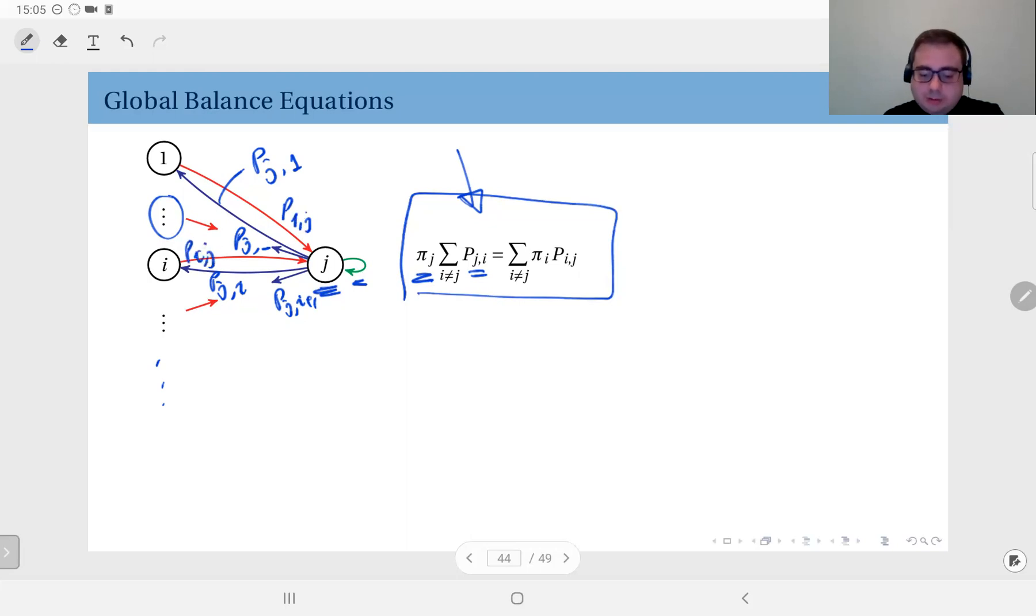If you multiply the probability of being in this state times the transition probability into j, plus all states - probability of being in those states times transition probability into state j, probability of being in state i times transition probability into state j - add them up, and those two fluxes should be equal to each other.